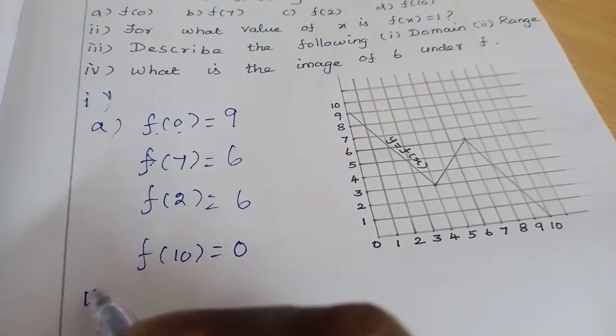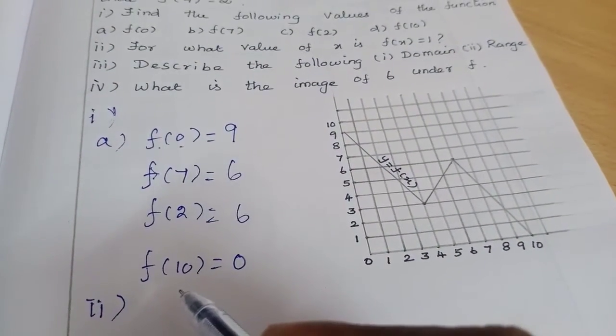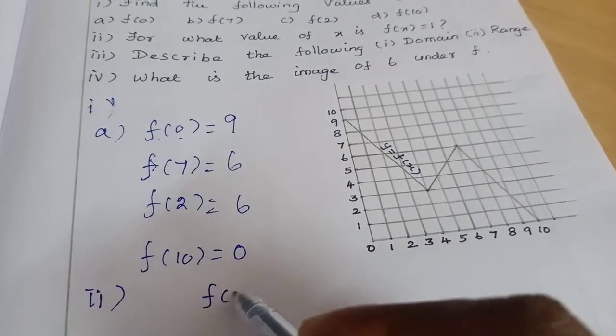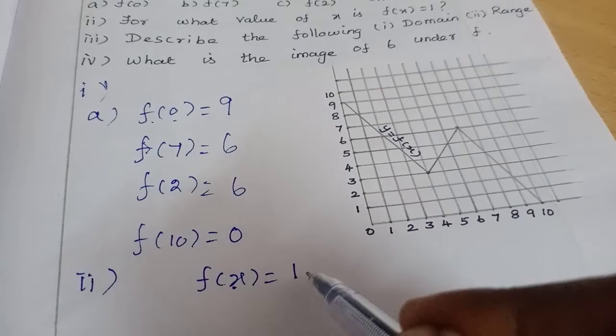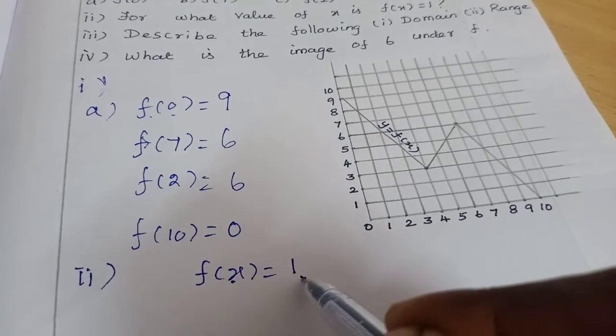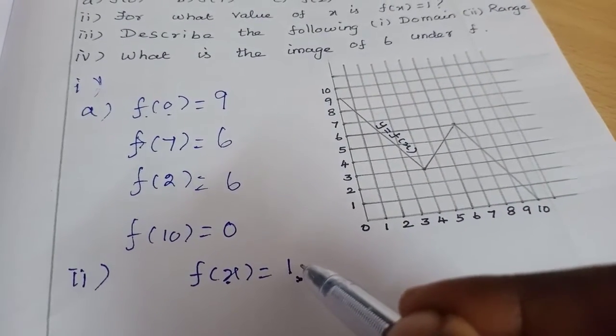Now second subdivision: for what value of x is f(x) equal to 1? Because x is input, y output value must be 1. So the function y output value must be 1.